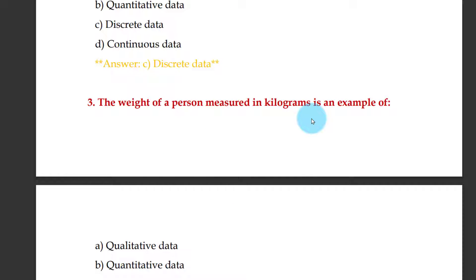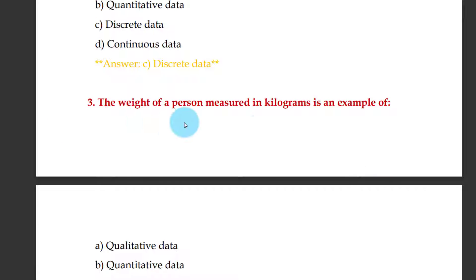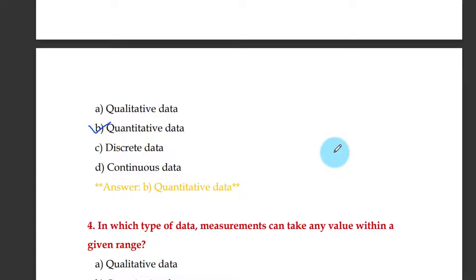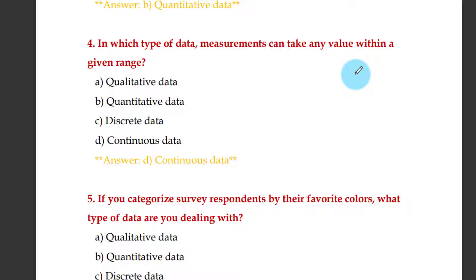The weight of a person measured in kilograms is an example of what? It is very simple — when you measure something numerically, that data is quantitative data. In which type of data can measurements take any value within a given range? That is nothing but continuous data.